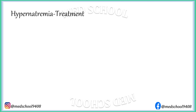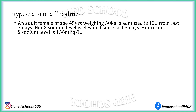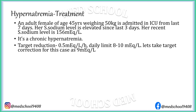Let's understand this formula with an example. Assume an adult female, age 55 years, weighing 50 kg, admitted to the ICU for the last 7 days. Her serum sodium has been elevated for the last 3 days, with a recent serum sodium of 156 mEq per litre. Duration is 3 days, so it is chronic hypernatremia. The target reduction is 0.5 mEq per litre per hour with a daily limit of 8 to 10 mEq per litre; we will take the target correction as 9 mEq per litre.